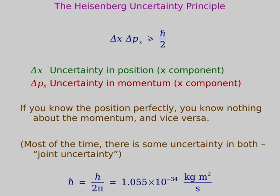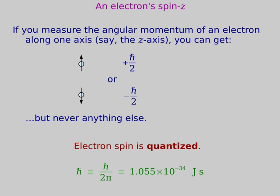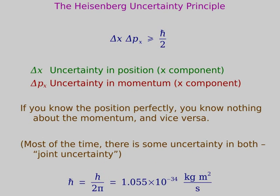Each electron has only a probability distribution for where it would be if you were to measure it. When you measure a quantity, you get something definite. If I measure the z-component of angular momentum, I either get plus h-bar over two or minus h-bar over two. If I measure the momentum of an electron, I get a definite momentum. But before I measure it, it doesn't have a definite momentum. So by measuring systems, you change the state of systems. Particles are in indeterminate states.